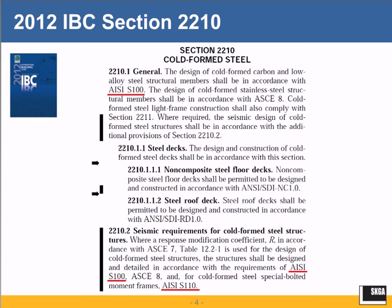The 2012 IBC Section 2210 covers cold-formed steel. Chapter 22 of the IBC deals with steel overall, and Section 2210 is on cold-formed steel. It points to the AISI specification S100, and states that design of cold-formed stainless steel shall be in accordance with ASCE 8. It also says light frame construction shall comply with Section 2211. Section 2210 also deals with cold-formed steel decks, including non-composite and steel roof deck.